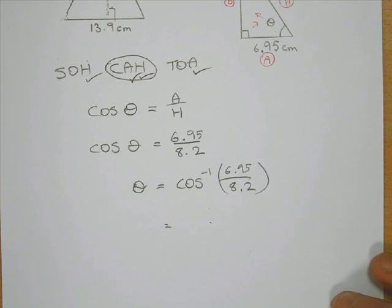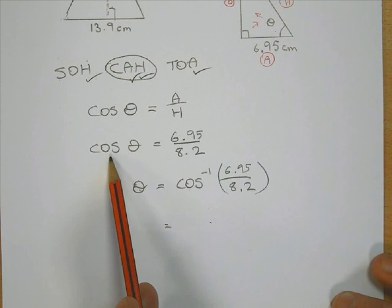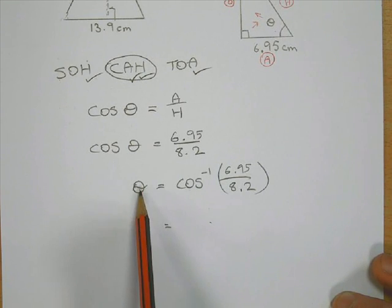Why does it work? Because we want to work out what theta is on its own. And theta is not on its own here because it's got cos. When you're trying to find an angle, you always do the inverse cos.